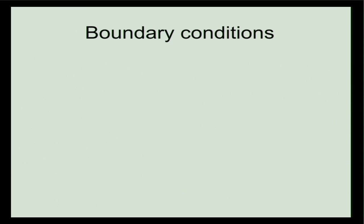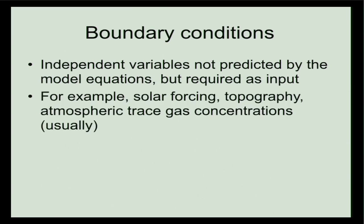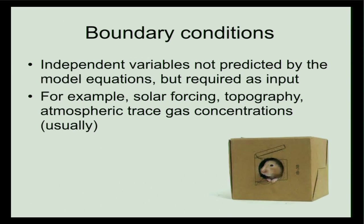Boundary conditions are also an important part of any model. The equations the code is solving often require inputs not contained within the model — things that the model doesn't itself know about. For a global model, you need to tell it about the solar forcing, since it's not doing solar physics. You have to include topography, since it's not doing plate tectonics. For most models doing future projections, they prescribe the CO2 concentration — they tell the model what the CO2 is doing going into the future. Those are all different boundary conditions.